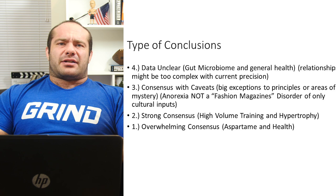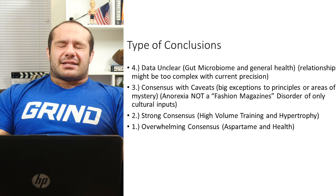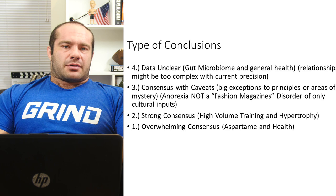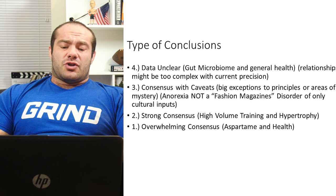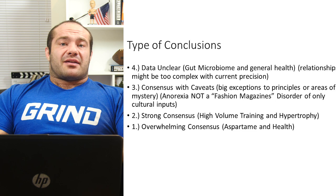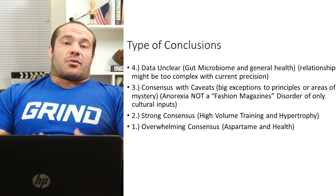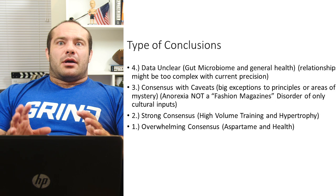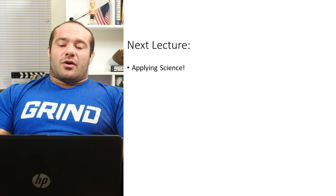Is there still a chance we're wrong even with overwhelming consensus? Yes — there's no certainty in science or in life. But if you're sure enough to wake up and assume the rising sun means you need to go to work in two hours, you can use that same level of certainty to think aspartame probably won't cause cancer. The purpose of science fundamentally is to drive as much human understanding into that category of overwhelming consensus. More on applying science in the next lecture, number four.